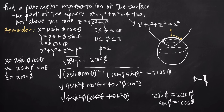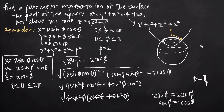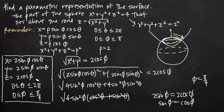This tells us that the intervals for our parametric equations are: theta is greater than or equal to 0 and less than or equal to 2 pi, since we're interested in the entire circle. For phi, it is greater than or equal to 0 and less than or equal to pi over 4. Instead of pi, which would define the entire sphere, pi over 4 tells us we only come down as far as where the sphere meets the cone. These parametric equations together with the intervals defining theta and phi give us the complete parametric representation of the surface.